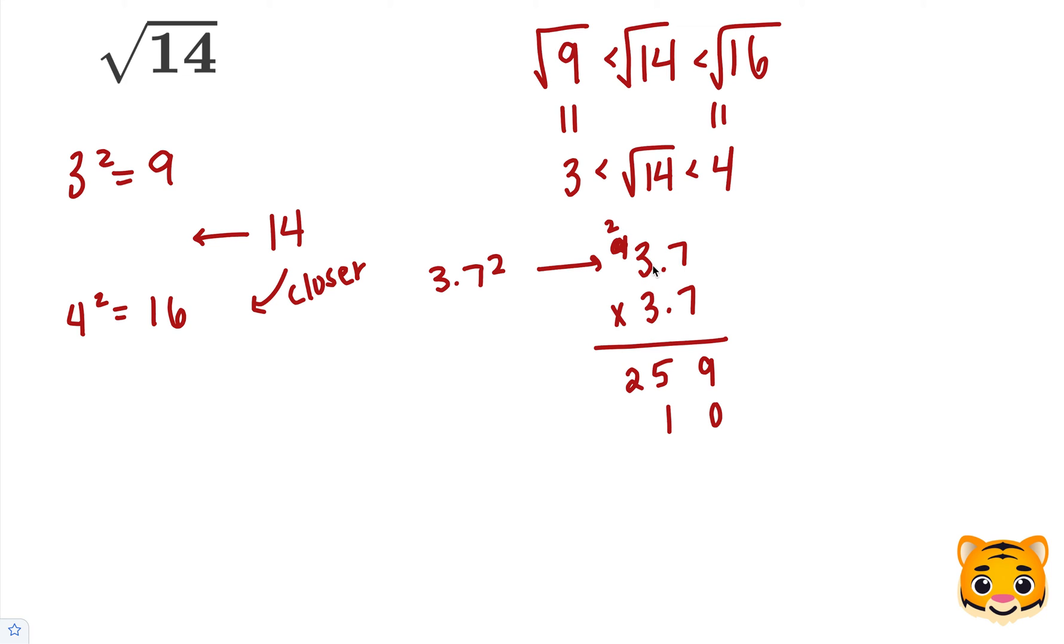And then 3 times 3 is 9, plus 2 is 11. When we add these values together, we get 13.69, which is very close to 14.